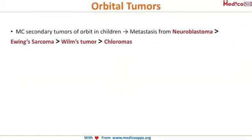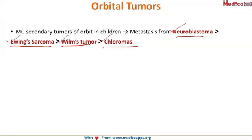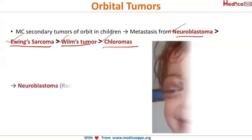The most common secondary tumor of the orbit is metastasis from neuroblastoma, followed by Ewing's sarcoma, then Wilms tumor, and chloromas. It depends on your options — if neuroblastoma is given, that will be your first answer; if not, mark Ewing's; if that is also absent, then Wilms or chloroma. These are the most common secondary tumors in the orbit in children.